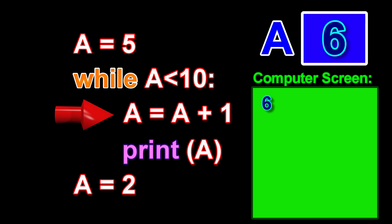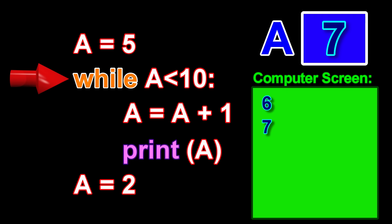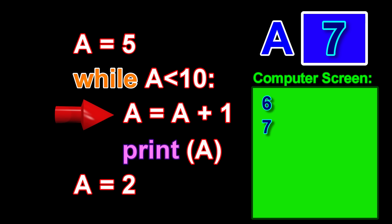The statement a equals a plus 1 changes the value for the variable a from 6 to 7. The statement print a displays 7 on the computer monitor. We have now reached the end of the loop and are therefore taken back to the beginning, where we check if the present value for the variable a is less than 10. In this way, we will keep repeating this loop several more times.